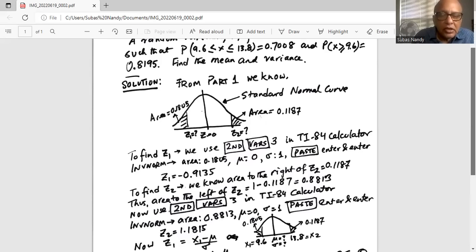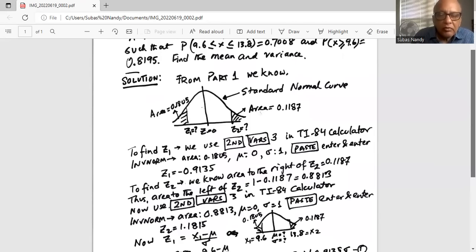Again we will use second vars 3 in TI-84 calculator. Area to the left is 0.8813. Mu is 0, sigma is 1 because it is a standard normal variable. And we get z2 is 1.1815.